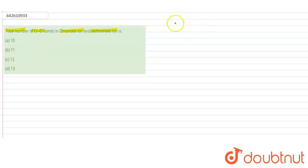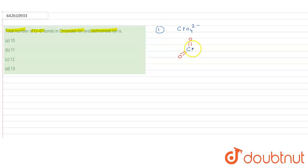Before solving this question, we need to know the structure of chromate ion and dichromate ion. The structure of chromate ion, CrO4²⁻, has chromium at the center. Two oxygen atoms are bonded by double bonds and two oxygen atoms are bonded by single bonds, giving O⁻ on those positions, in a tetrahedral structure. Each double bond consists of one sigma bond and one pi bond.